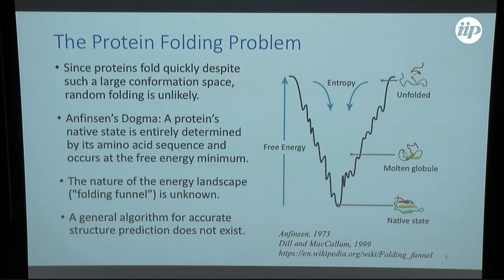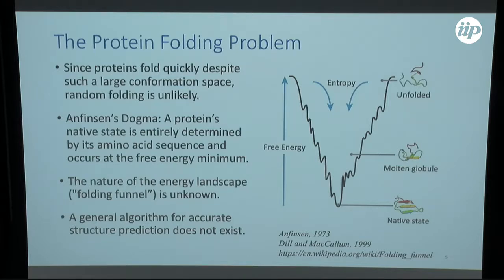So what's the problem? These proteins fold very quickly in the body, on the order of millisecond timescales. Given the vast number of degrees of freedom and thus the vast conformational space, it is basically impossible that these things fold randomly — there's some mechanism by which they fold so quickly. In 1973, Christian Anfinsen carried out his famous experiment and essentially concluded that the native state of the protein, the folded state, is determined by the amino acid sequence of the protein. So if we know the amino acid sequence, there's no reason we can't theoretically figure out the final folded structure.